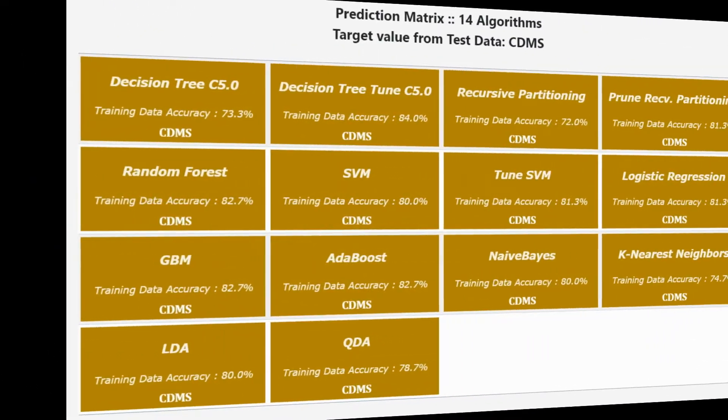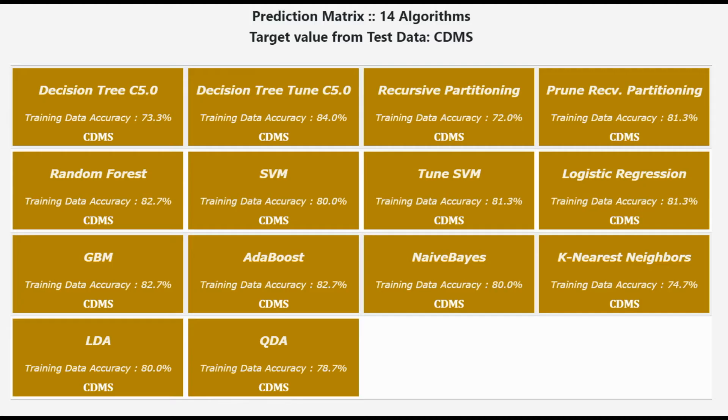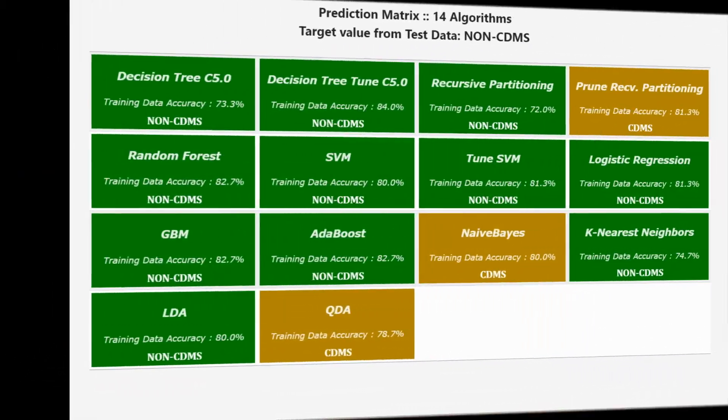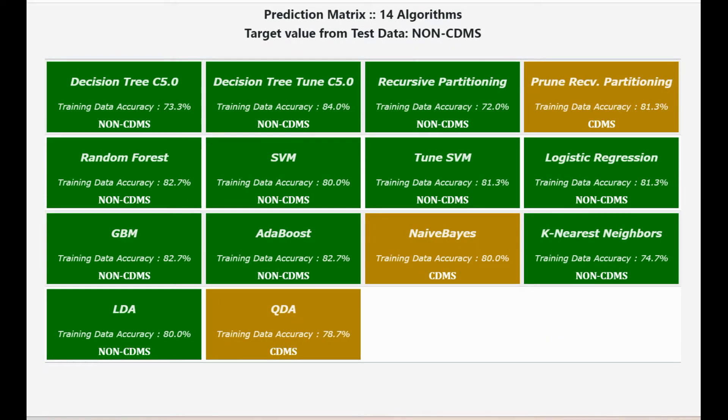Actual value of the dependent variable is shown in the title. From the reported matrix, you will see whether all algorithms predict the dependent variable correctly or which of the algorithm predictions are in line with actuals.